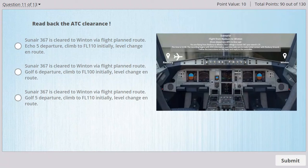Sunair 367 here is your ATC clearance. ATC clearance Sunair 367 to destination Winton airport, via flight planned route. Golf 5 departure, climb initially to flight level 110. Expect level change en route.